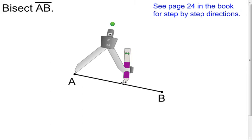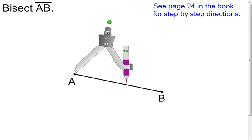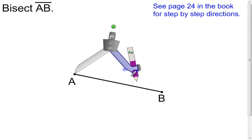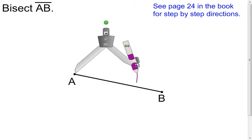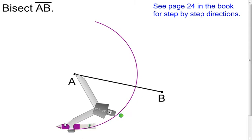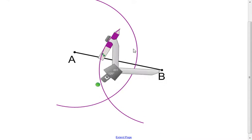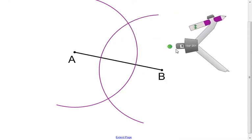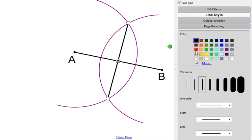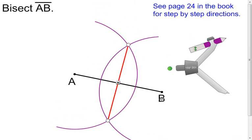You don't have to measure the segment to figure out what half is — just look at it and open it up. Then make an arc on both sides of the segment. Don't change the measurement, then go to your other end point and do the exact same thing. You've created two new points, and using those two points you can create a line. Use your straight edge and connect the dots — this red segment is the bisector of segment AB.